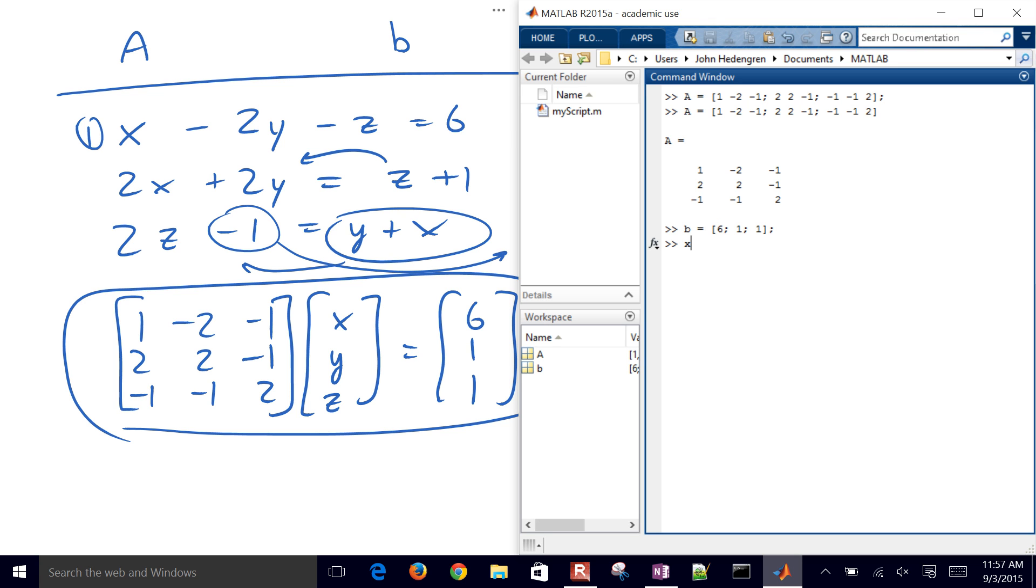And then let's go ahead and compute our solution, which is going to be the inverse of A times B. So there's our solution, 3, negative 2, and 1. So that's how you solve linear equations in MATLAB. Our next video is going to be about how to solve nonlinear equations in MATLAB. Thank you.